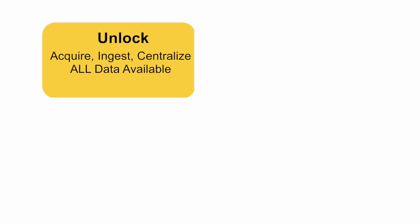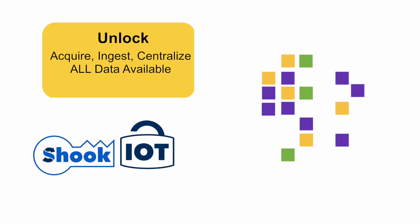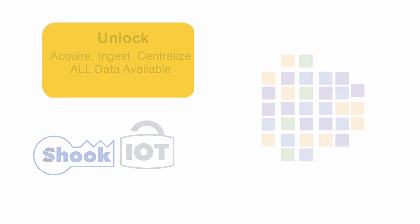Industrial intelligence starts with unlocking any data from multiple systems or sources, whether they be siloed, stranded, or data deemed cost-prohibited. Gain access to your data anytime, anywhere, and collect any type of data from any vendor, from any piece of equipment, device, or sensor.